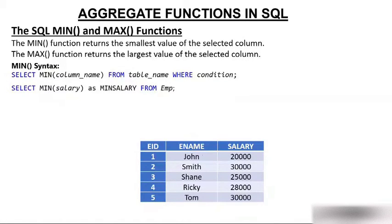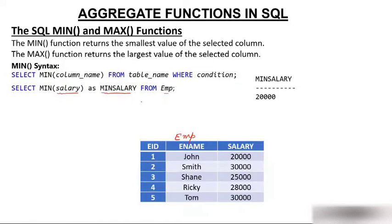Here the table 'imp' is in front of you. What we are doing is SELECT MIN(salary) AS min_salary FROM imp. We use 'AS min_salary' because if you don't, it will take the default column name. If you want a custom column name, you use AS. The answer is min_salary = 20,000. So the minimum salary in this table is 20,000.